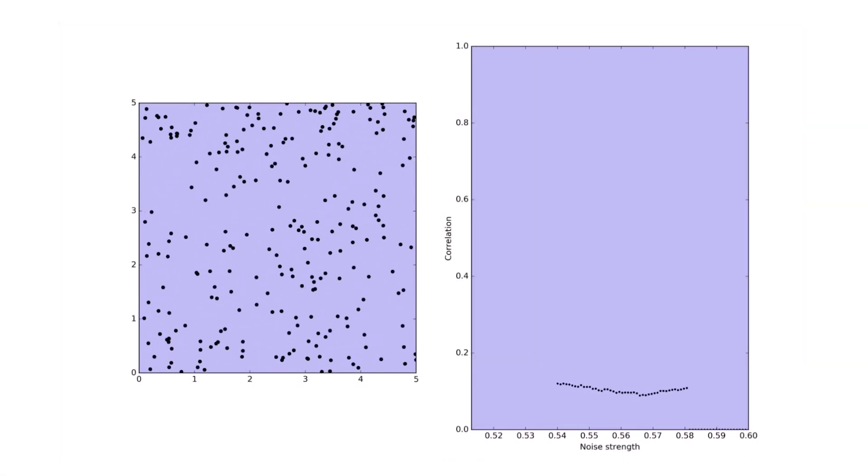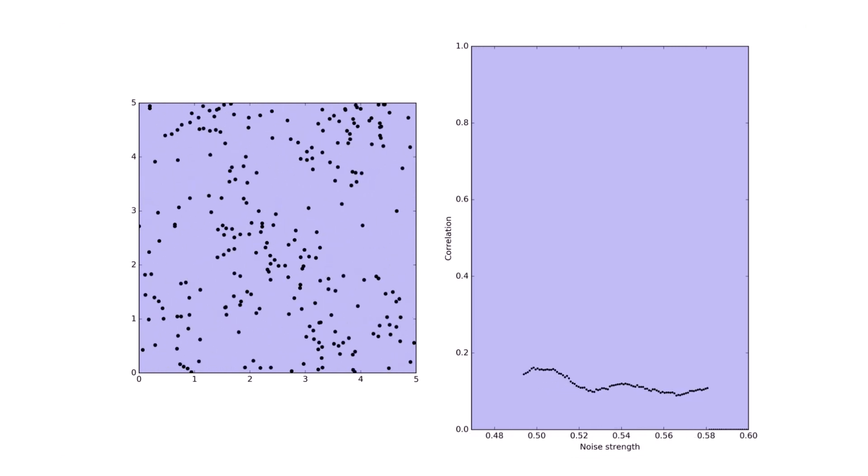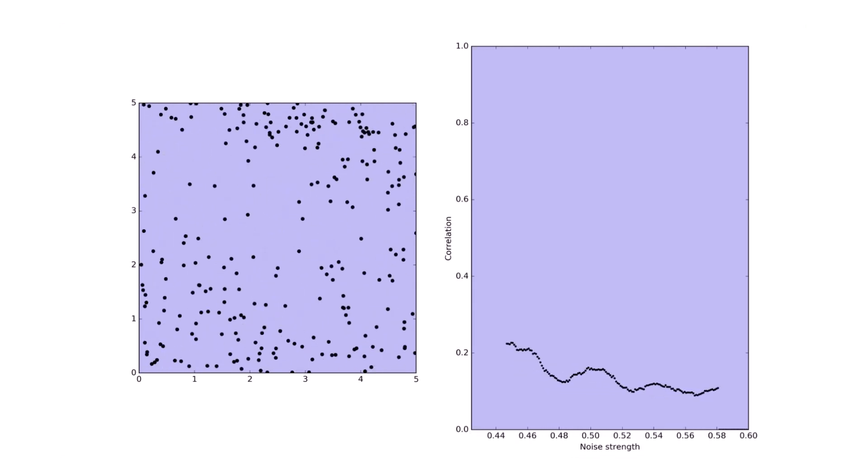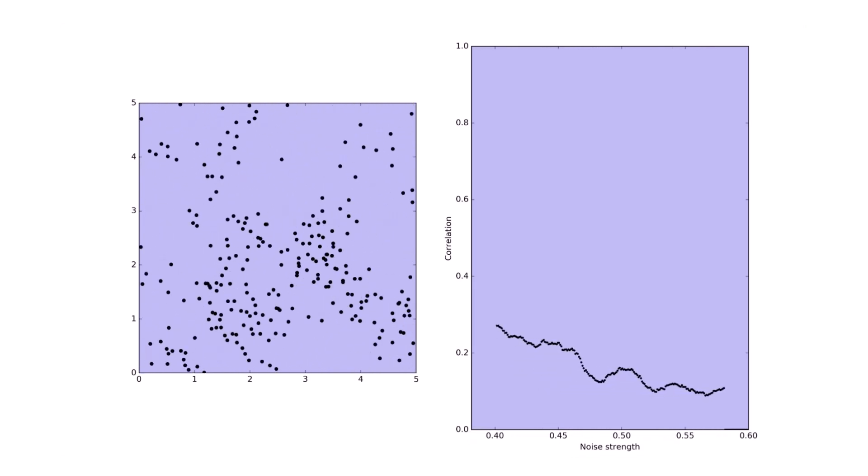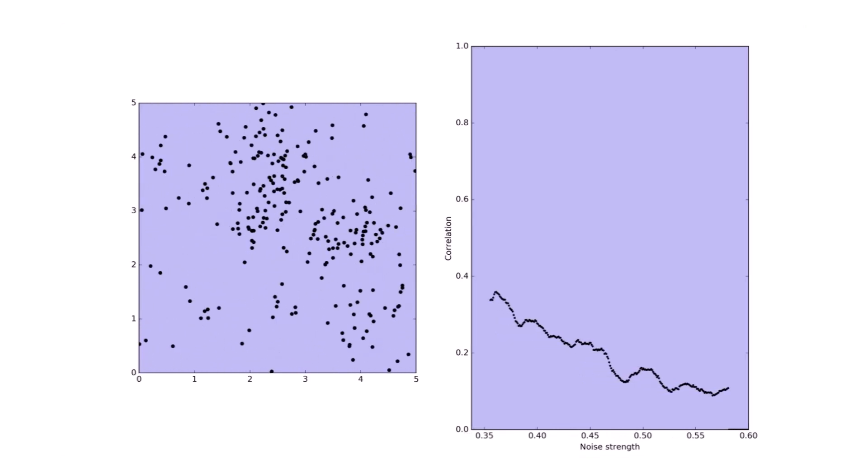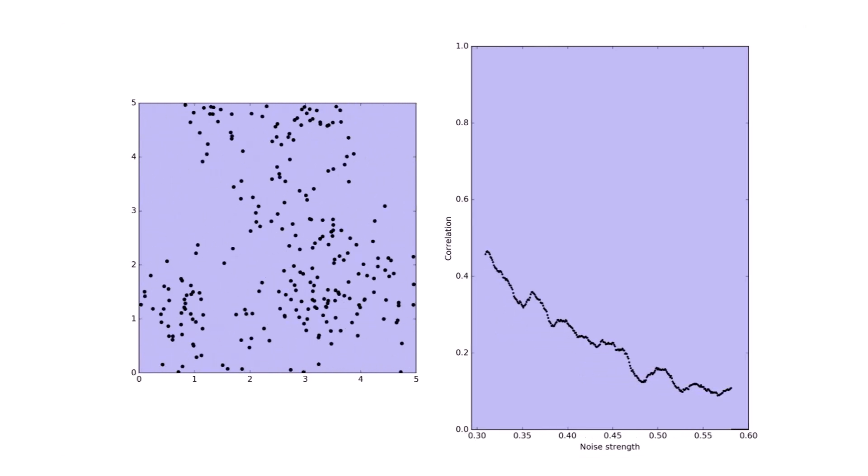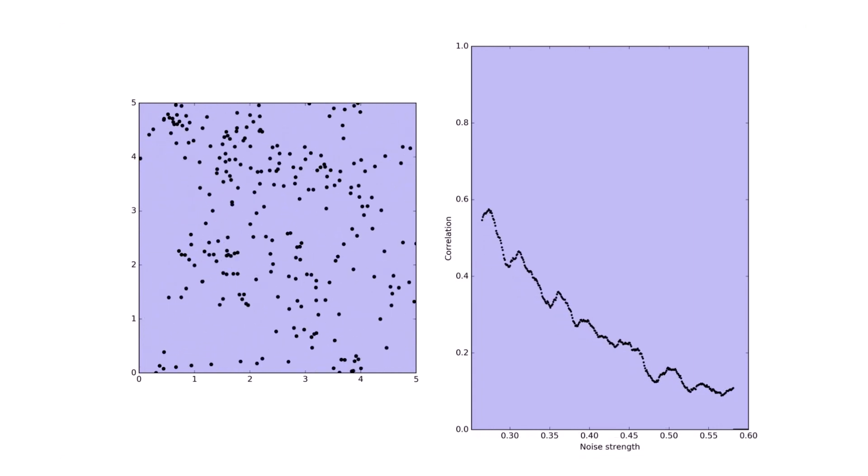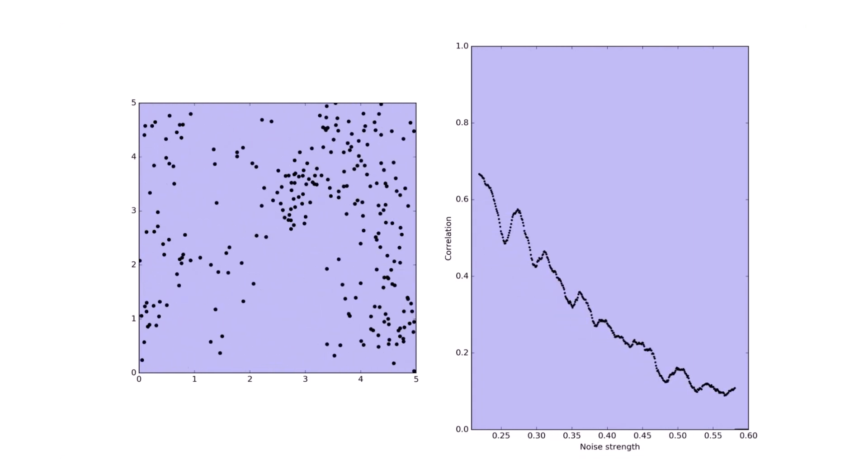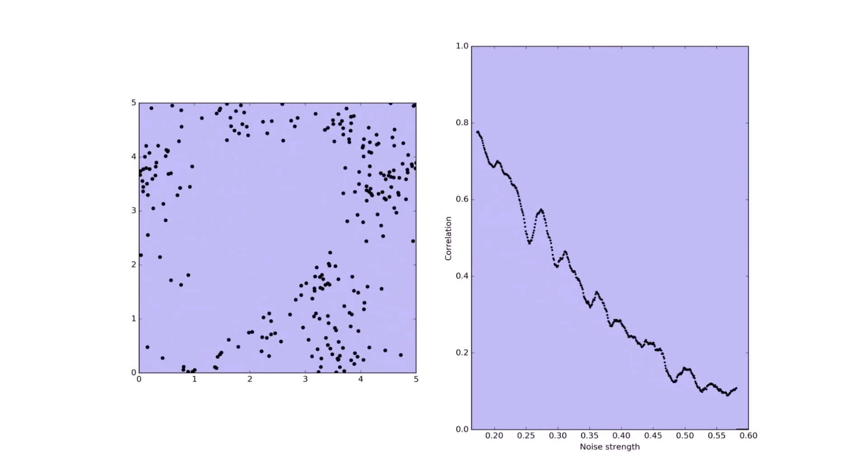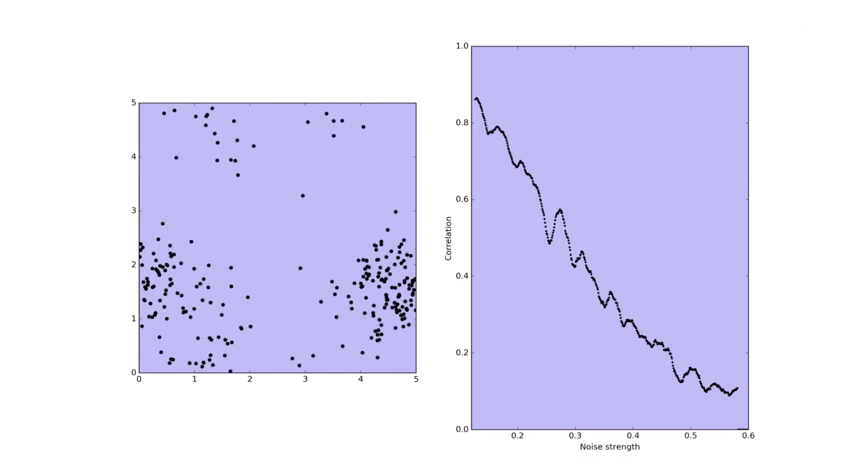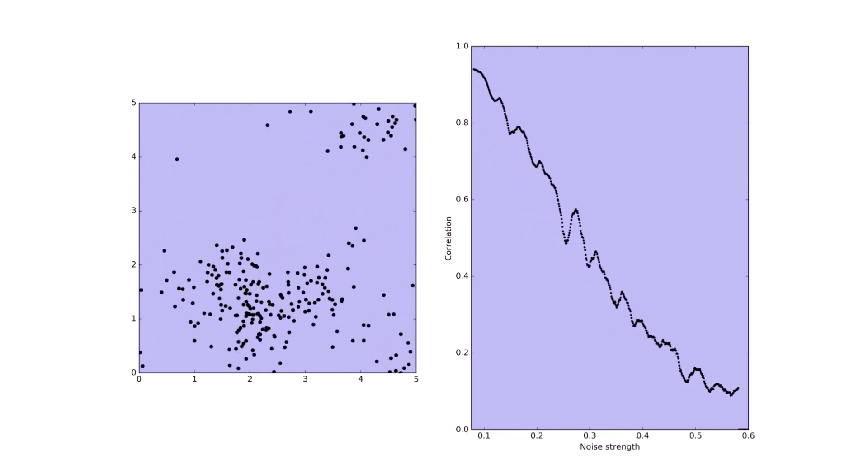Here we take another look at the influence of the noise strength. We slowly decrease the noise strength and keep track of the correlation. As the noise decreases, the correlation increases and the behavior changes from random motion to swarming behavior. As we decrease the amount of noise even further, the order parameter approaches 1 and all the birds take on the same direction, which is not in harmony with nature.